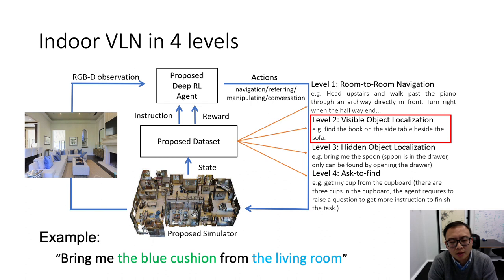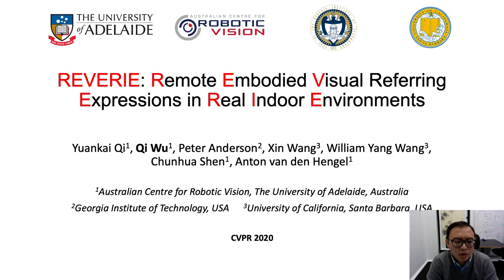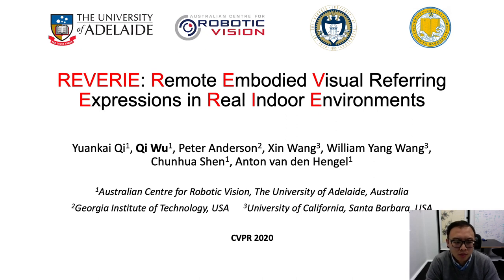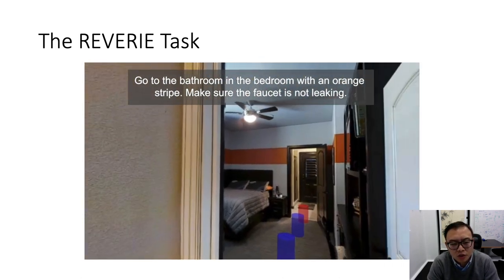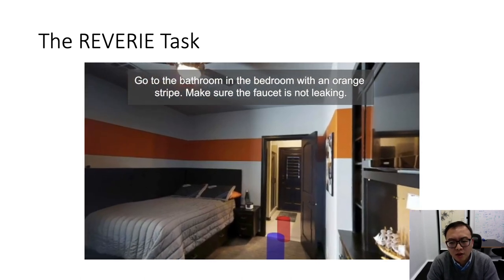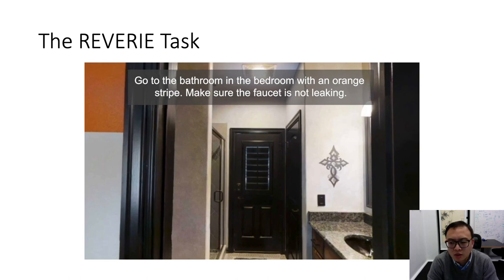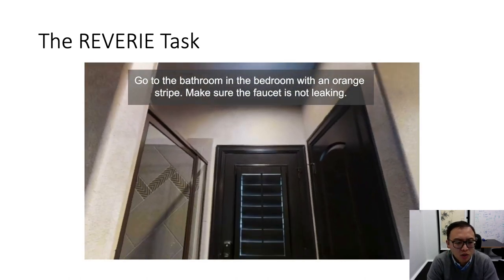At level two, we formulate a remote object referring expression task, where the agent needs to navigate to the right place and detect the target object by following a natural language instruction — for example, 'Bring me the blue cushion from the living room.' The second dataset I want to introduce is REVERIE, which combines vision-language navigation with referring expression. REVERIE stands for Remote Embodied Visual Reference Expressions in Real Indoor Environments. In a 3D simulator, a robot agent is initialized at a random location, given a natural language instruction referring to a remote object, and must navigate to an appropriate location and identify the target.